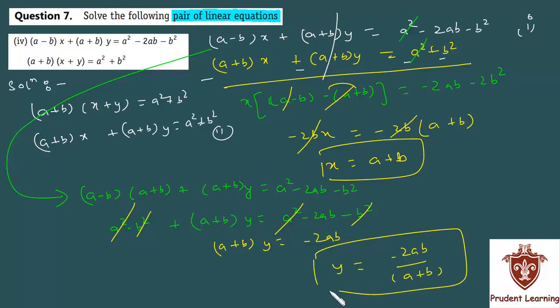So we now have both x and y. x equal to a plus b and y equal to minus 2ab over (a plus b). This completes our solution. Let us now move on to the last section of the same question.